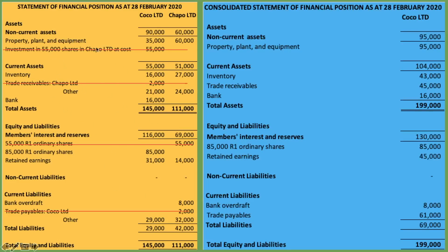Once we've cancelled them out, whatever is remaining we just add together to create the consolidated statement of financial position. We add property, plant and equipment together; inventories together; bank — we only have the one for the parent company; ordinary shares; and retained earnings added together. Note that you do not net off the bank, which is positive on the asset section of the parent, with the bank overdraft of the subsidiary. We don't do that because it would be less informative and would conflict with the principle that assets and liabilities should not be netted off. Once done, your consolidated statement of financial position should balance — total assets is 199,000 and total equity and liabilities is 199,000 Rand.